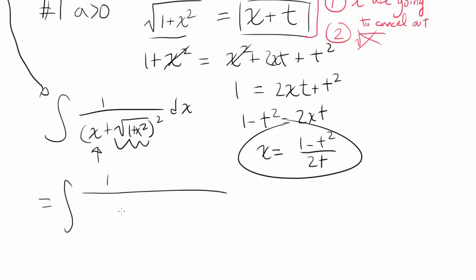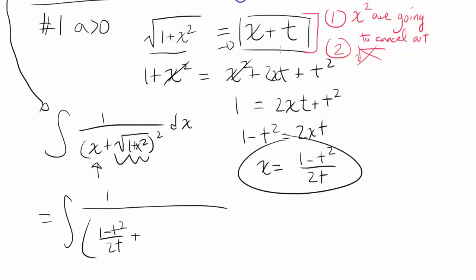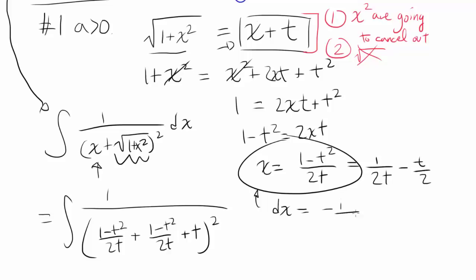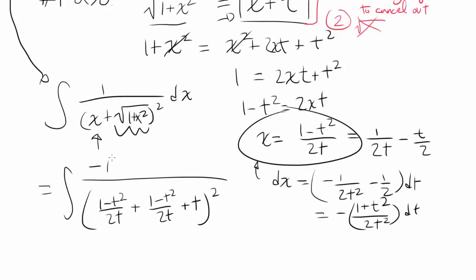So we have 1 over: x is (1 minus t squared)/(2t), plus x plus t where x plus t equals (1 minus t squared)/(2t) plus t. Now let's find dx. We write x as (1/(2t)) minus (t/2), so differentiating gives dx equals negative (1/t²) minus (1/2), also written as negative (1 plus t²)/(2t²). Therefore dx equals negative (1 plus t²)/(2t²) dt.